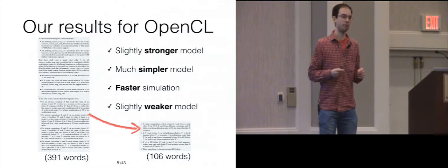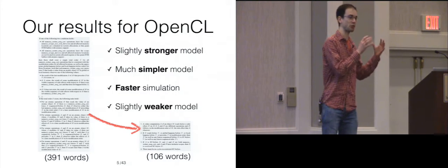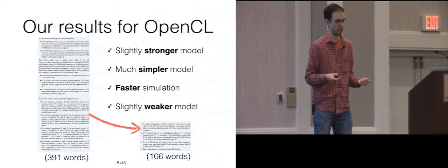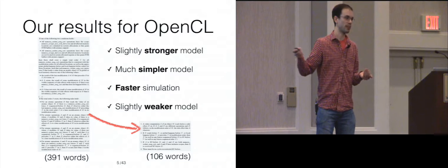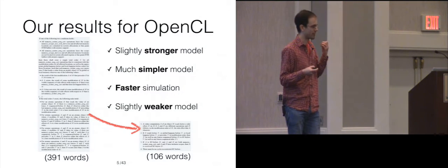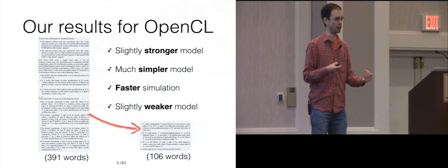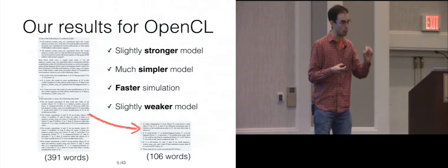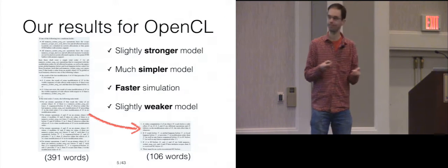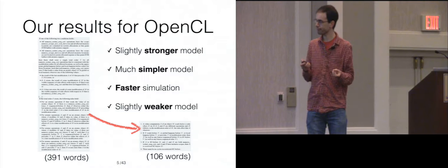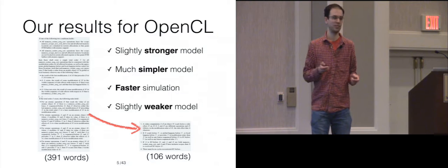The OpenCL memory model inherits most of the C11 memory model, so many of our results for C11 carry over pretty straightforwardly to OpenCL. In the case of OpenCL we went slightly further and also slightly weakened the model: we found that the original OpenCL contract imposed too many obligations on the compiler writer, to the extent that we could find some OpenCL programs that were actually impossible to compile efficiently. So we removed some of these obligations. In this talk I won't have time to talk about OpenCL further — it's all in the paper. I'm going to focus just on C11.